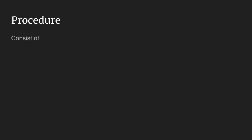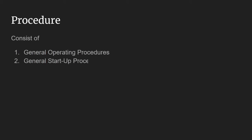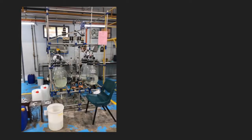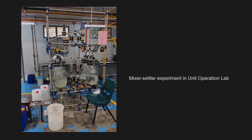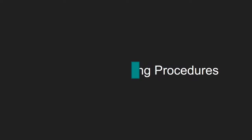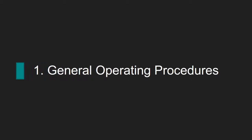There are four procedures in this experiment: 1. General Operating Procedures, 2. General Startup Procedures, 3. General Shutdown Procedures, and 4. Experiment Procedures. This picture presents the mixer-settler experiment in the unit operations lab. It is important that the user reads and fully understands all the instructions and precautions stated in the technical documentation supplied with the mixer-settler prior to operation.